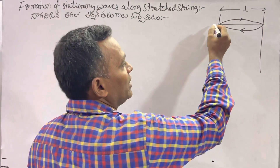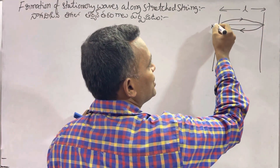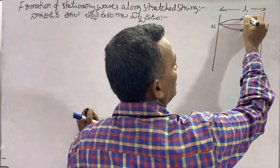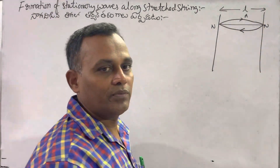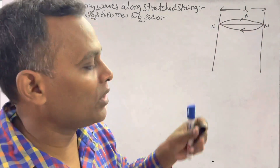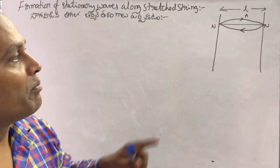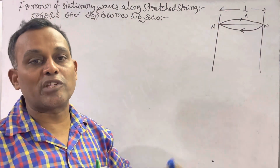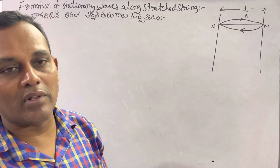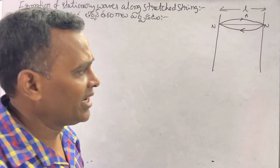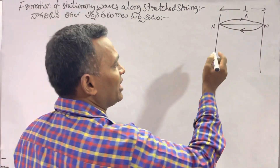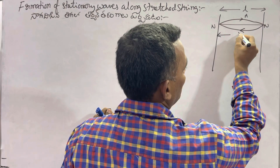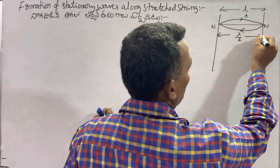So always at the ends, the nodes are formed, and at the middle, the anti-nodes are formed. The distance between these two nodes is half of the wavelength.